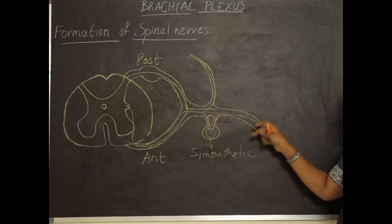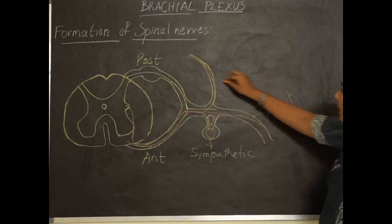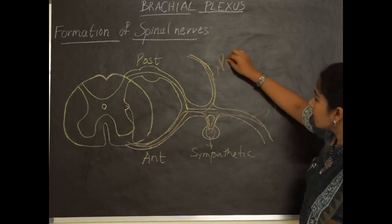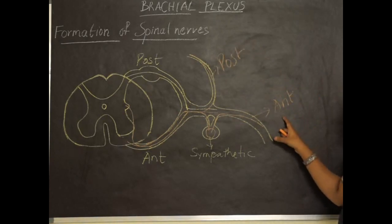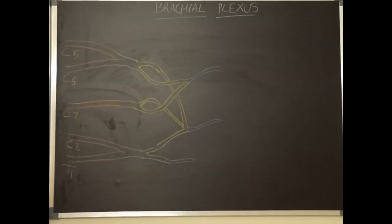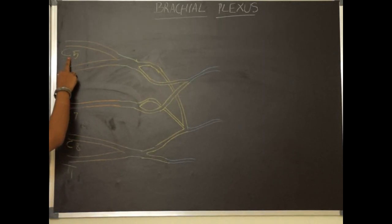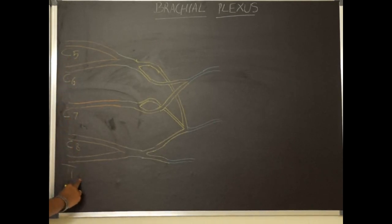The spinal nerve gives rise to anterior primary rami and posterior primary rami. These anterior primary rami give rise to brachial plexus. The roots giving rise to brachial plexus are from spinal segments C5, C6, C7, C8, and T1.